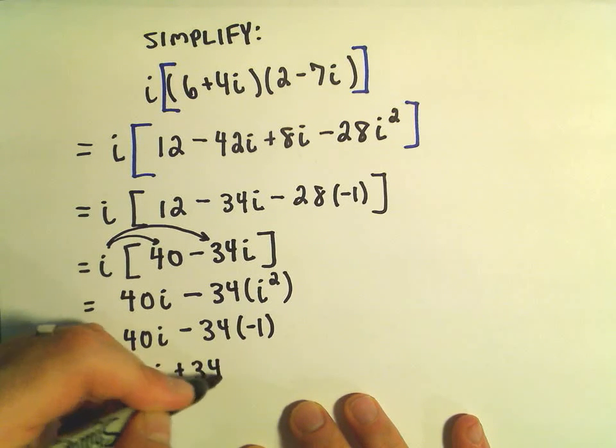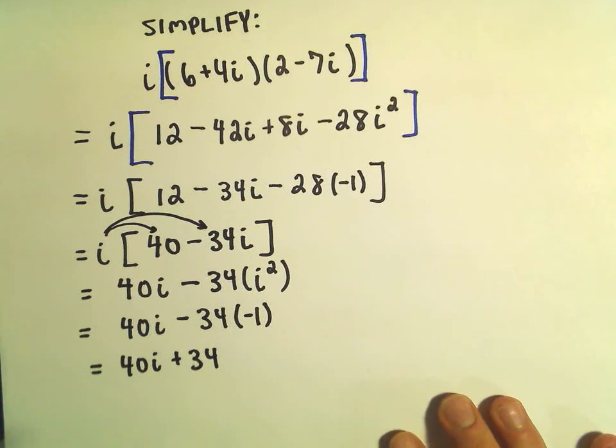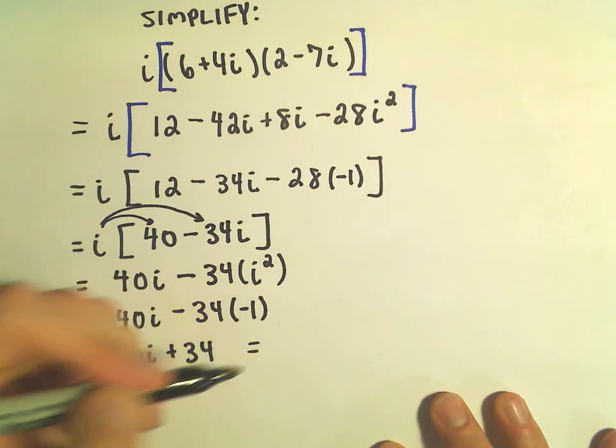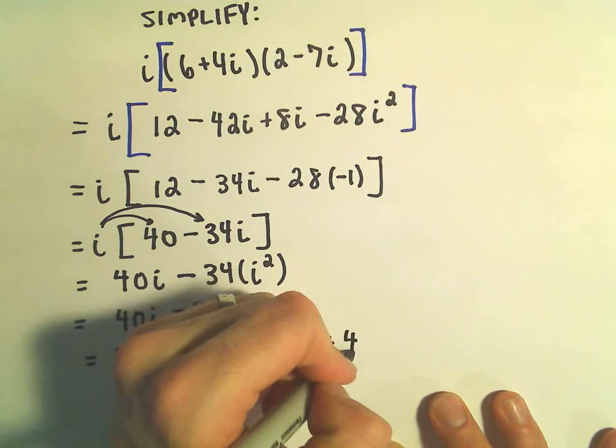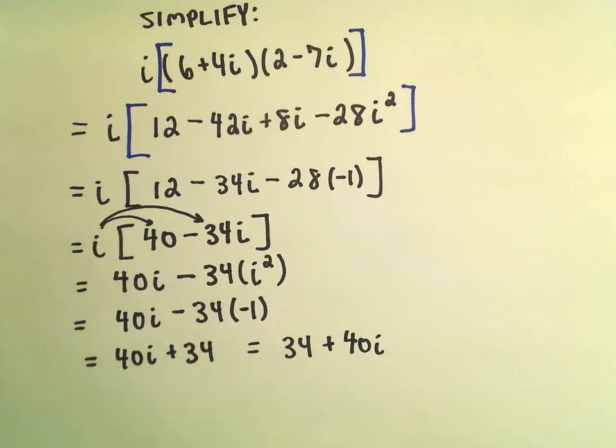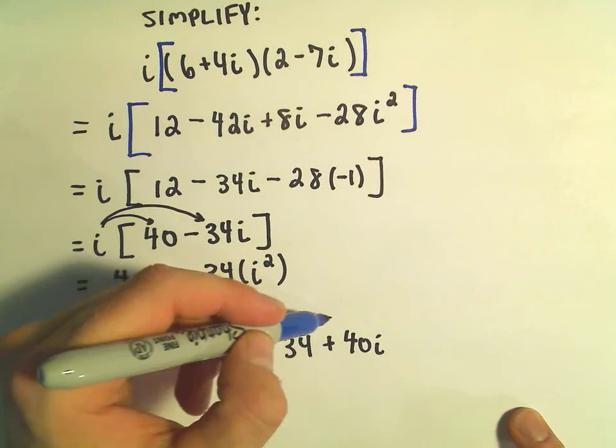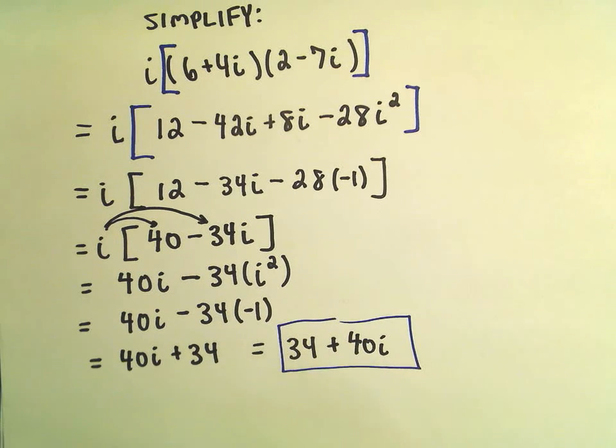And again, typically you'll write, the convention is to write the real part first and the imaginary part, which is positive 40i, we'll write that second. And now we have multiplied out this original expression.